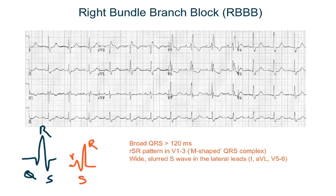In right bundle branch block, however, after the P wave there is no Q wave. Instead, there is a positive deflection — that is, an R wave. Then after the R wave is a negative deflection which is the S wave, and then again a positive deflection which is another R wave. So you see an R, S, R pattern mainly in leads V1, V2, and V3, and they look like the letter M.